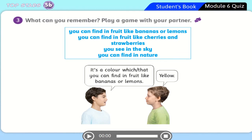What can you remember? Play a game with your partner. It's a color you can find in fruit like bananas or lemon. It's a color you can find in fruit like cherries and strawberries. It's a color you see in the sky — you can find it in nature. It's a color which or that you can find in fruit like bananas or lemon — the answer is yellow. I use the relative pronouns 'which' or 'that' — both are okay, both are correct. In the next part we will practice using the relative pronouns 'which' and 'that'.